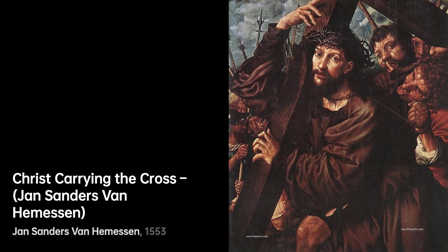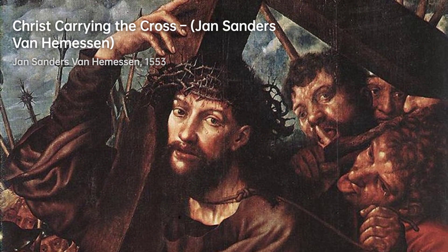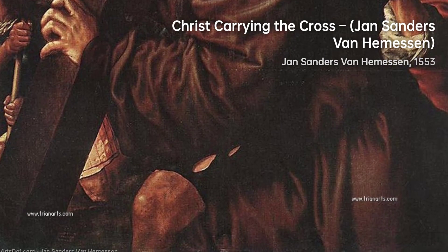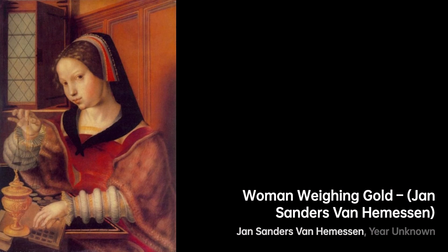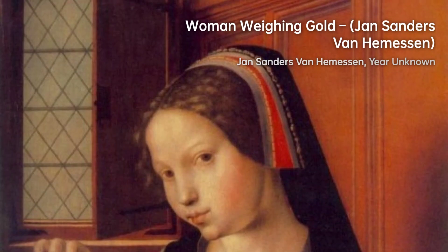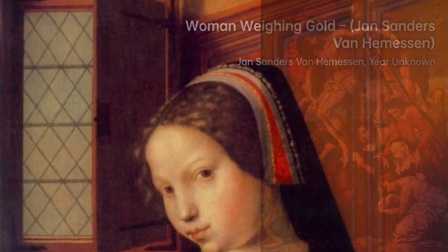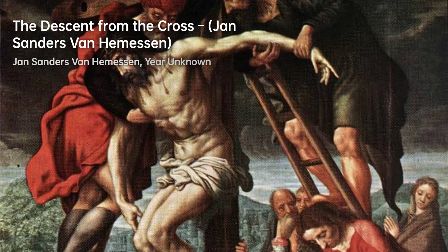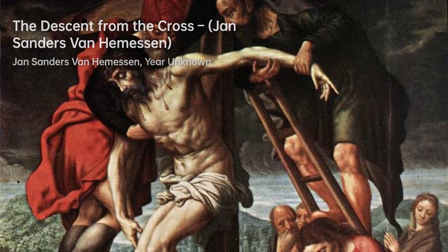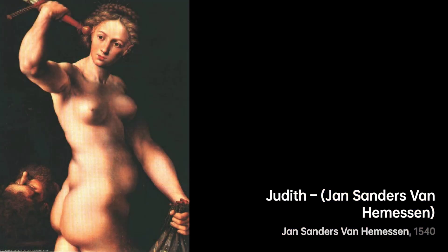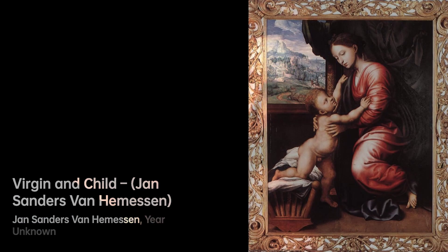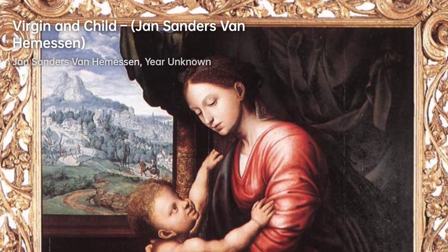Van Hemessen is believed to have worked at the Royal Court in Mechelen and may have encountered Jan Gossart, a court painter, and the master of the legend of the Magdalene. It is unclear whether he spent time in Haarlem, as mentioned by biographer Karel van Mander. Van Hemessen was married to Barbara de Fevra and had two daughters. After his wife's death, he had an illegitimate son named Peter with his maid. His daughter Katharina Van Hemessen also became a successful portrait painter.